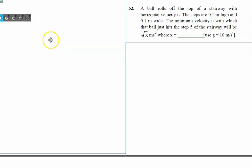A ball rolls off the top of a stairway with horizontal velocity u. Let's say this is the top of the stairway, the zeroth stair. The steps are 0.1 meter high and 0.1 meter wide. This is the breadth and this is the height, both are 0.1 meter.